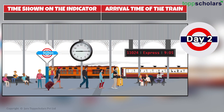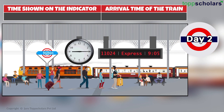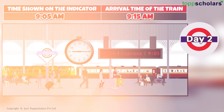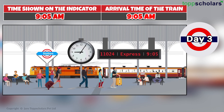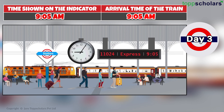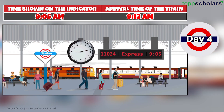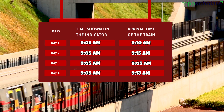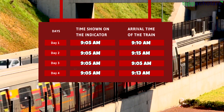Similarly, on day two the train comes and we note down the arrival time and the timing shown on the indicator — it is 9:15 and on the indicator it is 9:05. Followed by day three and day four. We have the final data over here.